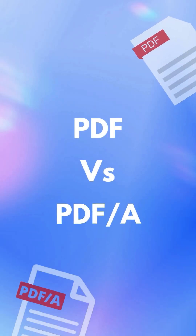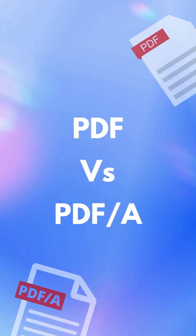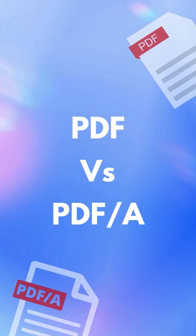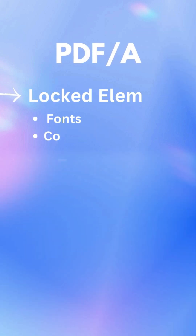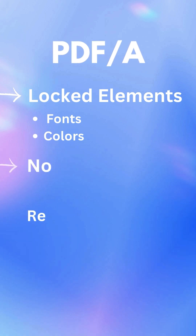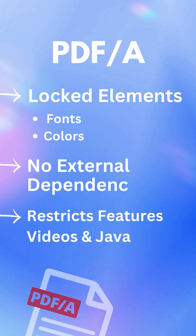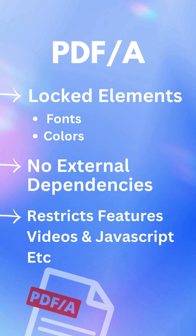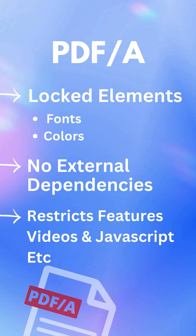No worries about software changes or missing fonts. So what's the difference between PDF-A and regular PDFs? Well, with PDF-A, all the elements like fonts and colors are locked inside the document. It also restricts features like videos or JavaScript, which you might see in regular PDFs. That's because PDF-A is all about consistency and stability over time.